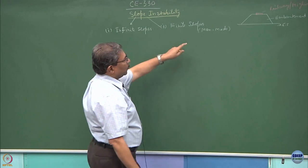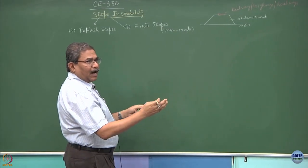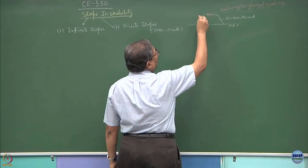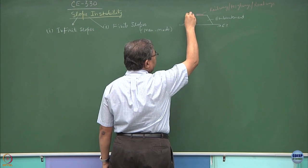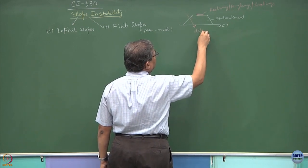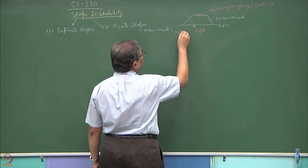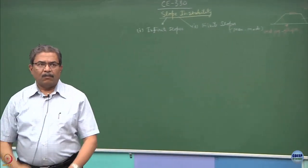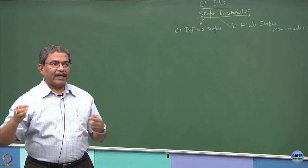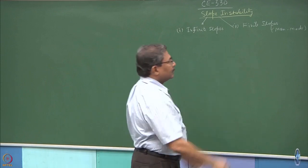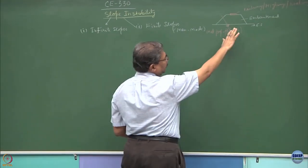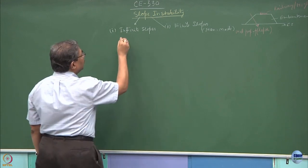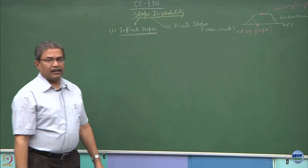In context of finite slopes, which we will be discussing in the second half of this topic, I will take it up later. Normally, the properties of the material change as a function of depth — more compaction means more c, more phi, more density. More c, phi, gamma with more compaction effect. These are typically finite slopes. To begin our discussion on slope stability, I will first take up infinite slopes.